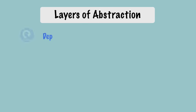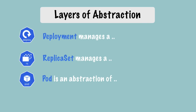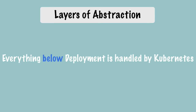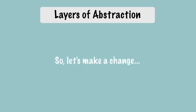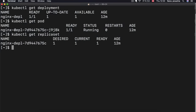This is how the layers work: first you have the deployment, the deployment manages a replica set, the replica set manages all the replicas of that pod, and the pod is an abstraction of a container. Everything below the deployment should be managed automatically by Kubernetes — you shouldn't have to worry about any of it. For example, the image it uses — I would have to edit that in the deployment directly and not in the pod. Let's go ahead and do that: `kubectl edit deployment nginx-deployment`.